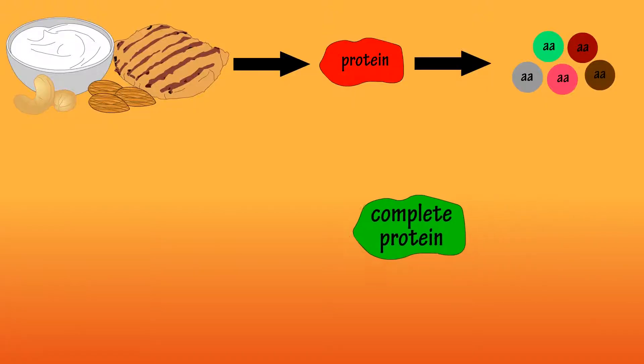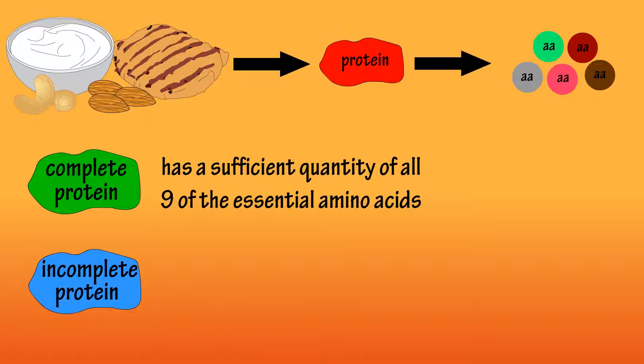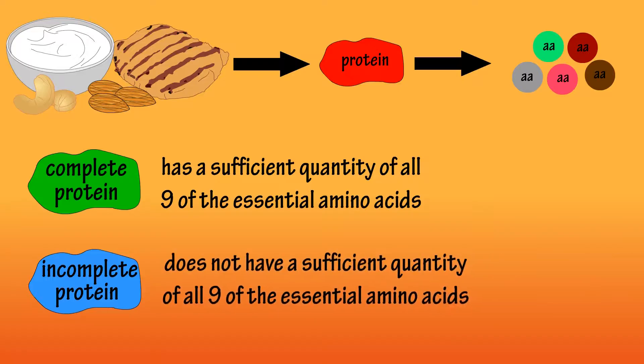Protein is often classified as complete or incomplete protein. A complete protein is a protein source that contains a sufficient quantity of all 9 of the essential amino acids. An incomplete protein does not contain a sufficient quantity of all 9 of the essential amino acids.